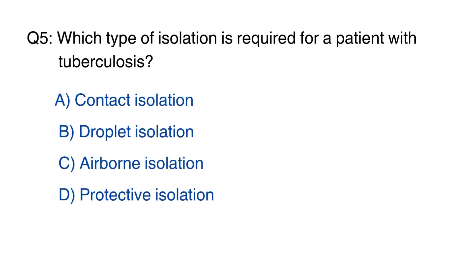Question number 5: Which type of isolation is required for a patient with tuberculosis? The right option is option C, airborne isolation.